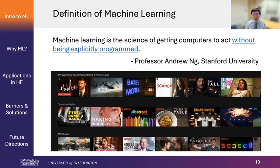What machine learning does is you don't have to explicitly program it. It uses algorithms to analyze millions and billions of users' data, and the computers actually make the decision as to what movies to recommend based on your preferences and previous viewing habits. That's really the key difference between machine learning and classical computer programming.